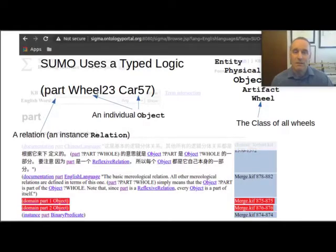So if we just look in the Sigma knowledge engineering environment, the stuff highlighted in red, you can see where I'm showing a page from the browser at sigma.ontologyportal.org. You can see that the domain of the part relation, both the first argument and second argument are both objects.